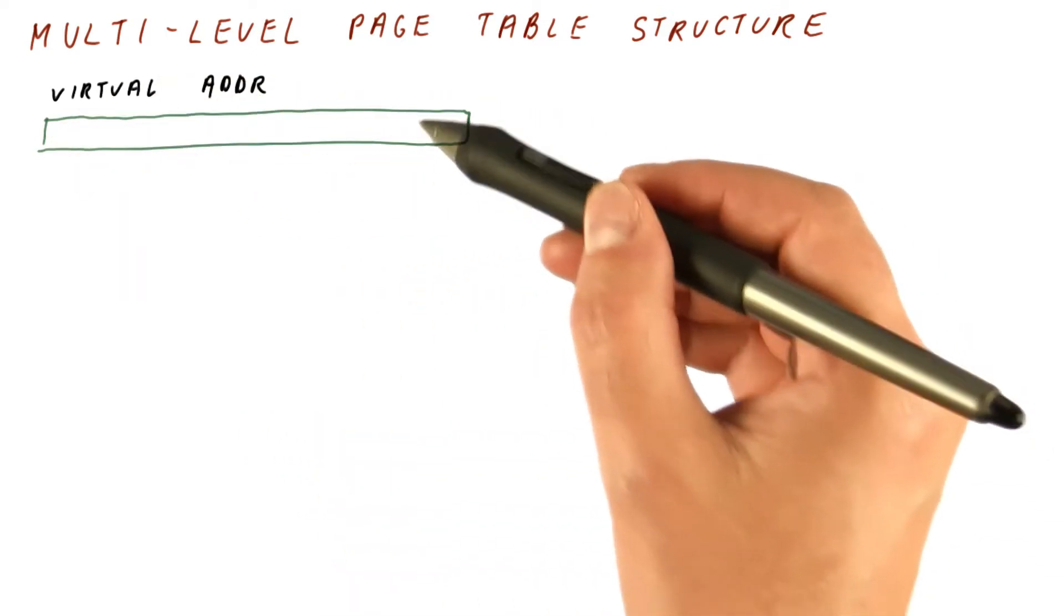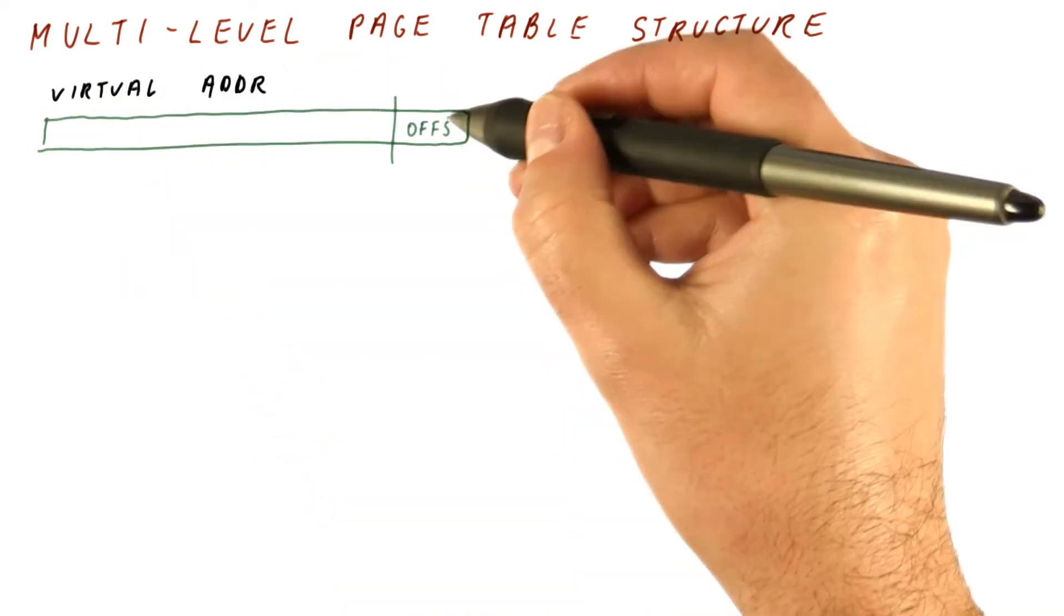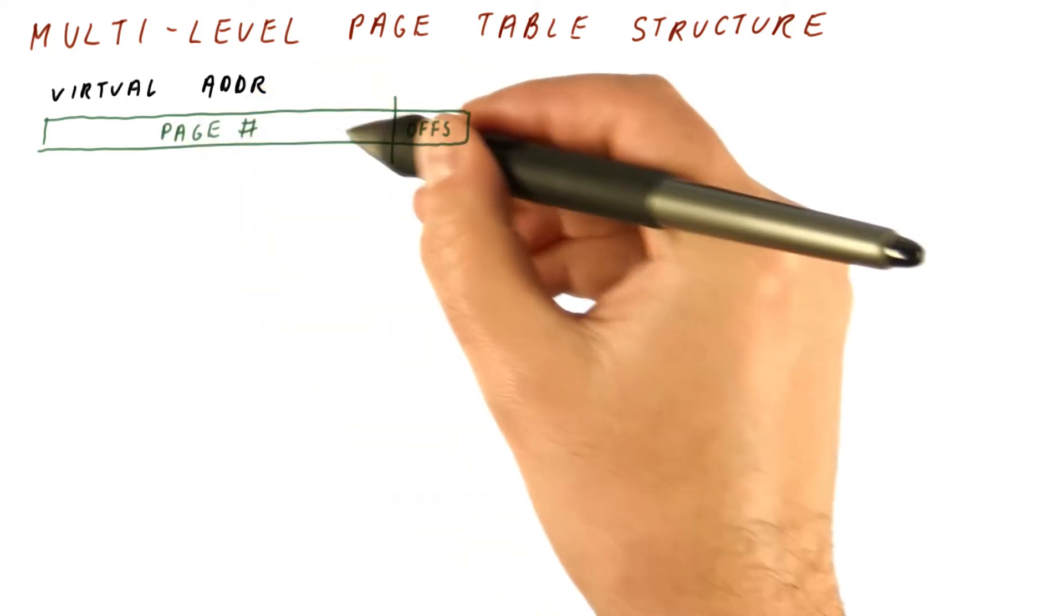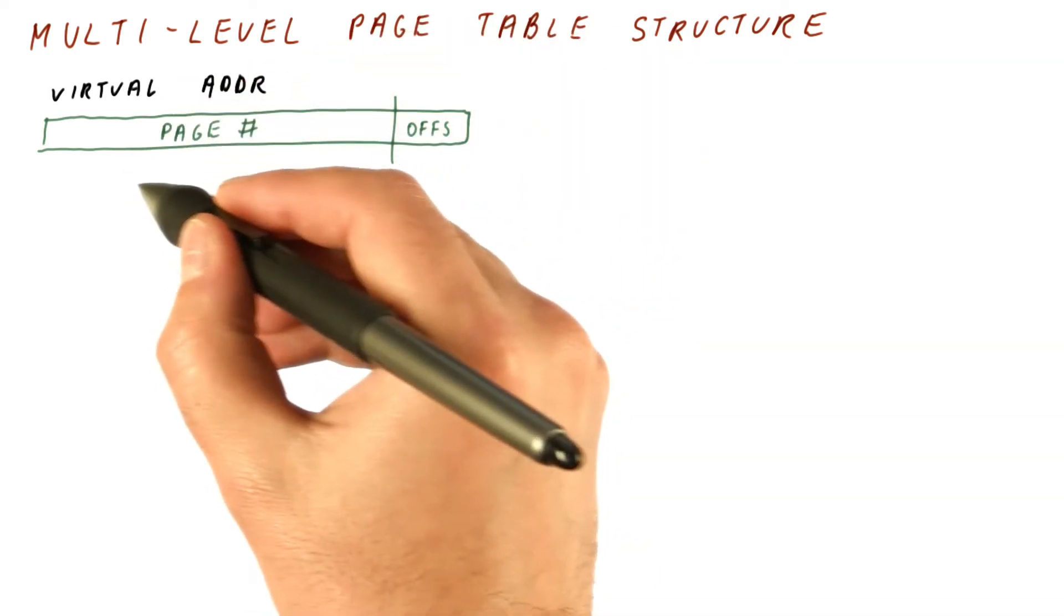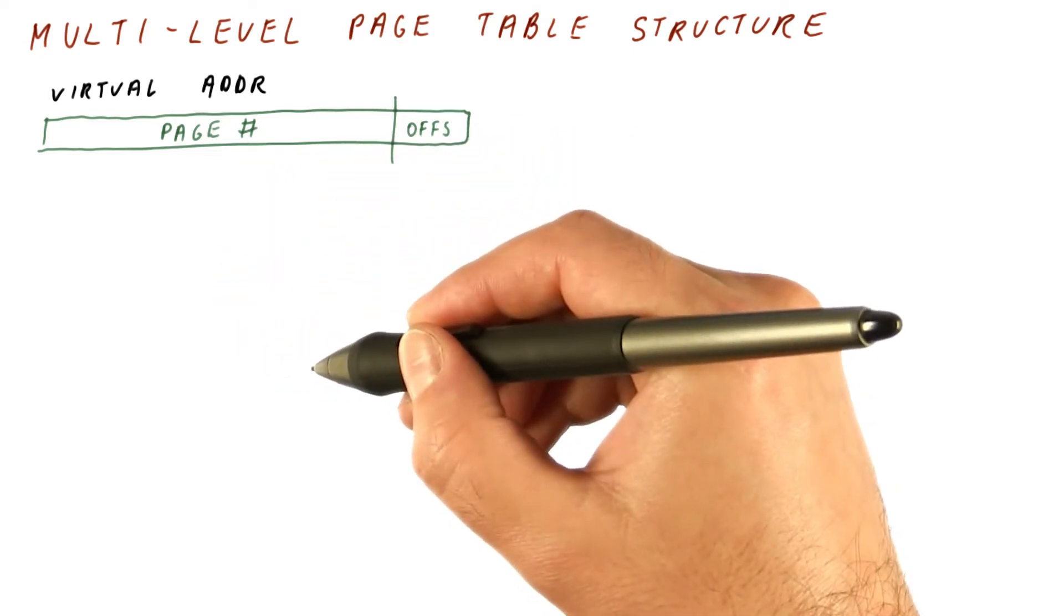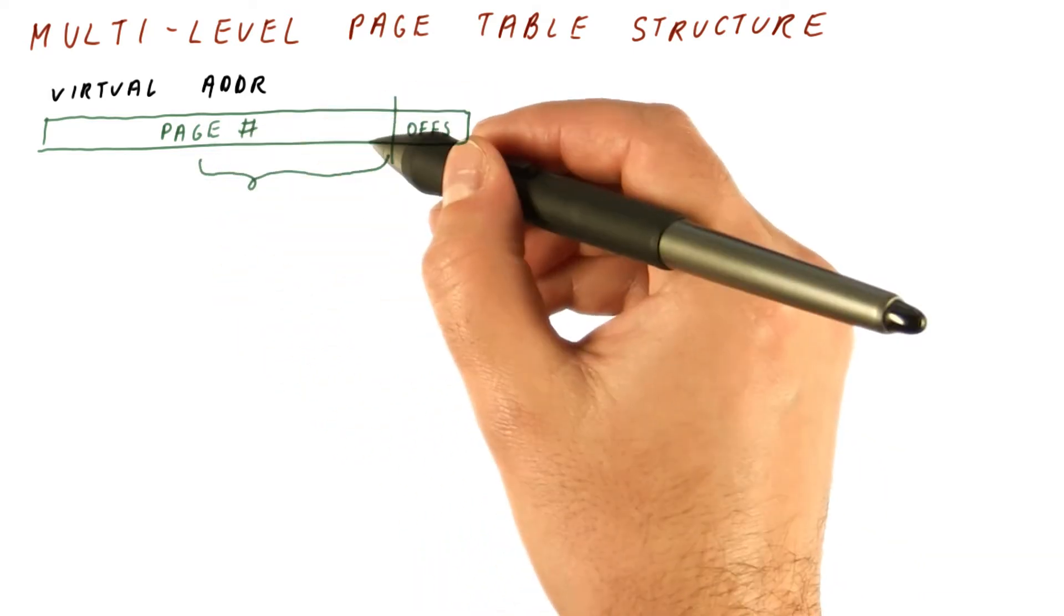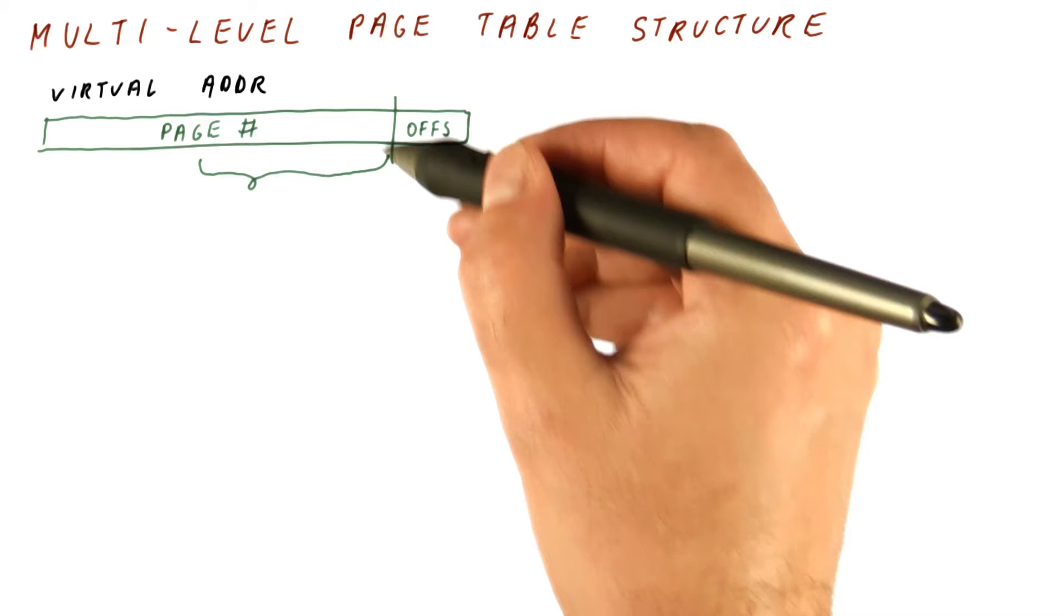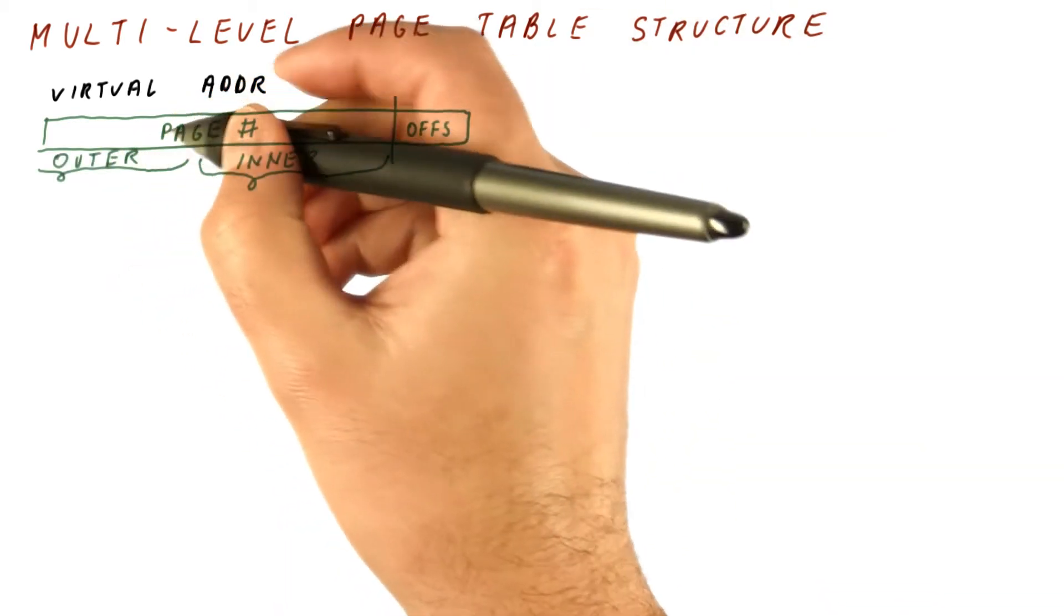So the multilevel page table still looks at the virtual address in terms of page offset and page number, but instead of using the entire page number to access one huge table, it partitions the page number into the so-called inner page number and the outer page number.